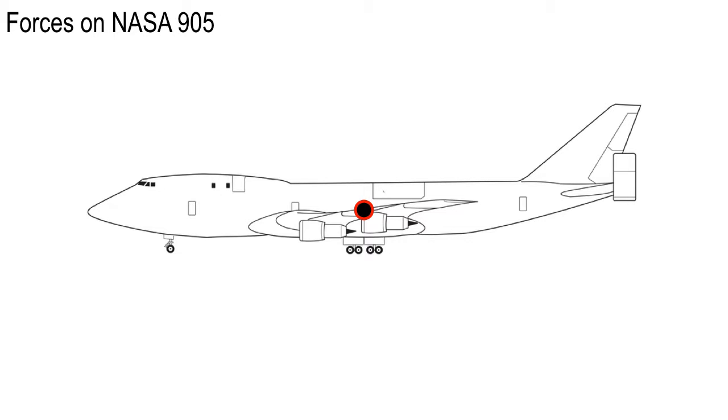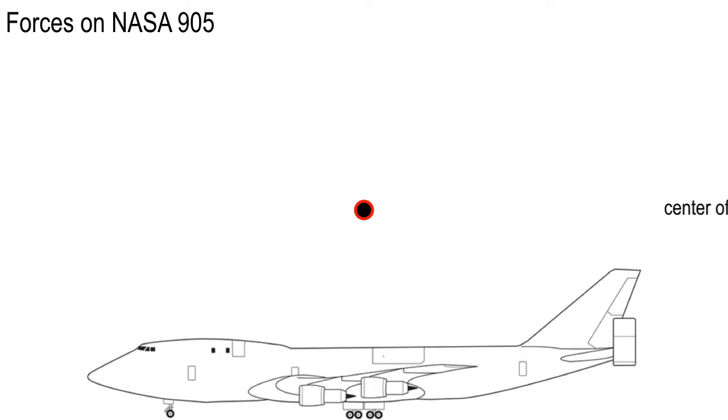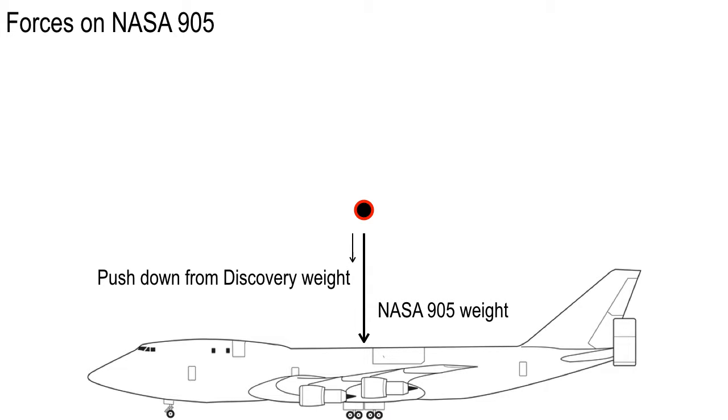Here it is, and I've put a big black dot kind of in the middle to represent the center of mass. We're going to take that dot and let that represent this big 747. The first forces are the downward forces. We have the weight of NASA 905 and we've got some push down from Discovery because of its weight. So if it's on the runway, that is the force keeping it down.